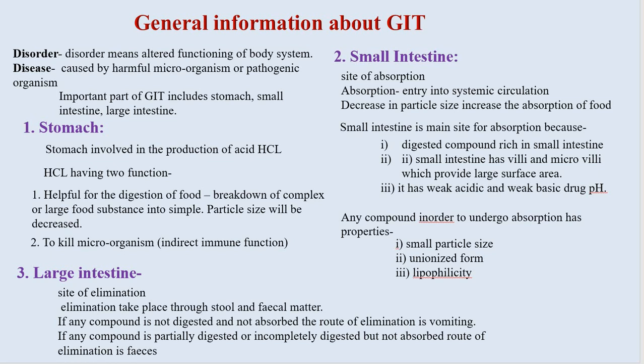The third part of the gastrointestinal tract is the large intestine. It is the site of elimination. Elimination takes place through stool and fecal matter. If any compound is not digested and not absorbed, the route of elimination is vomiting. And if the compound is partially or incompletely digested but not absorbed, the route of elimination is feces or fecal matter.